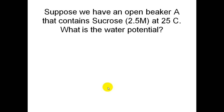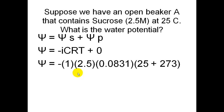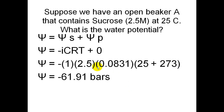For another example: an open beaker containing sucrose at 2.5 molar at 25 degrees Celsius. Water potential equals negative ICRT plus 0. Plugging in: i = 1 (sucrose has no ions), C = 2.5, R = 0.0831, T = 25 + 273. Calculating all that out gives negative 61.91 bars. Water potential is always going to be negative unless it's distilled water, and that's how you calculate water potential.